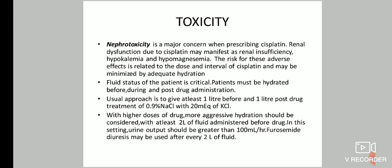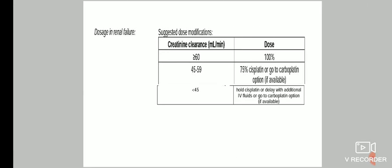Adequate hydration and forced diuresis are essential to prevent nephrotoxicity. When administering cisplatin, serum creatinine levels must be evaluated and creatinine clearance calculated. If creatinine clearance is ≥60 ml/min, 100% dose can be given. If between 45-59, 75% of the dose can be given or carboplatin used instead. If less than 45 ml/min, cisplatin should be avoided until creatinine clearance improves, or carboplatin substituted.